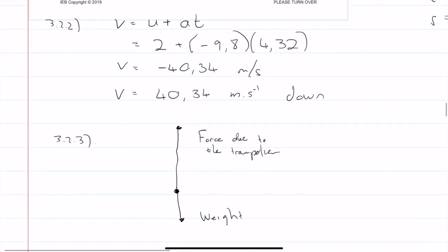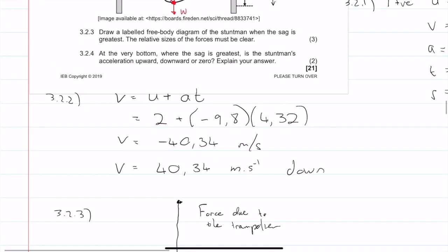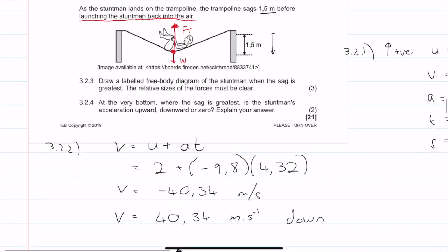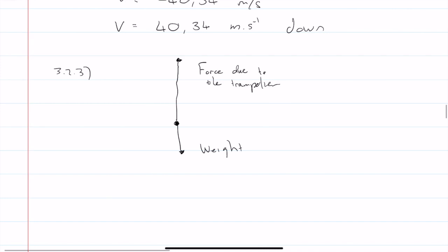And the last question is at the very bottom where the sag is greatest, is the stuntman's acceleration up, downward, or zero? So we already discussed that the force from this picture that I've drawn here, or the free body diagram, we know that the force of the trampoline is greater than weight. So that way, we know that from Newton's second law, we know that force tension, or sum of the forces, is equal to mass times acceleration.